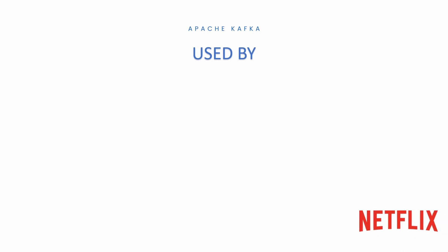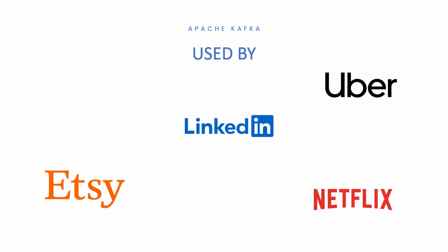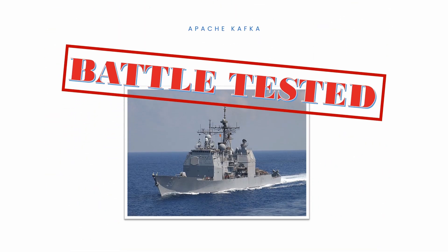Kafka is used by thousands of big and small companies. Netflix uses Kafka for data analytics, Uber for passing data from mobile applications to backend services, Etsy for communication between backend services, LinkedIn for data ingestion, and Spotify for merchant analytics. Kafka is a battle-tested platform for building real-time stream processing systems that can handle data at large scale.